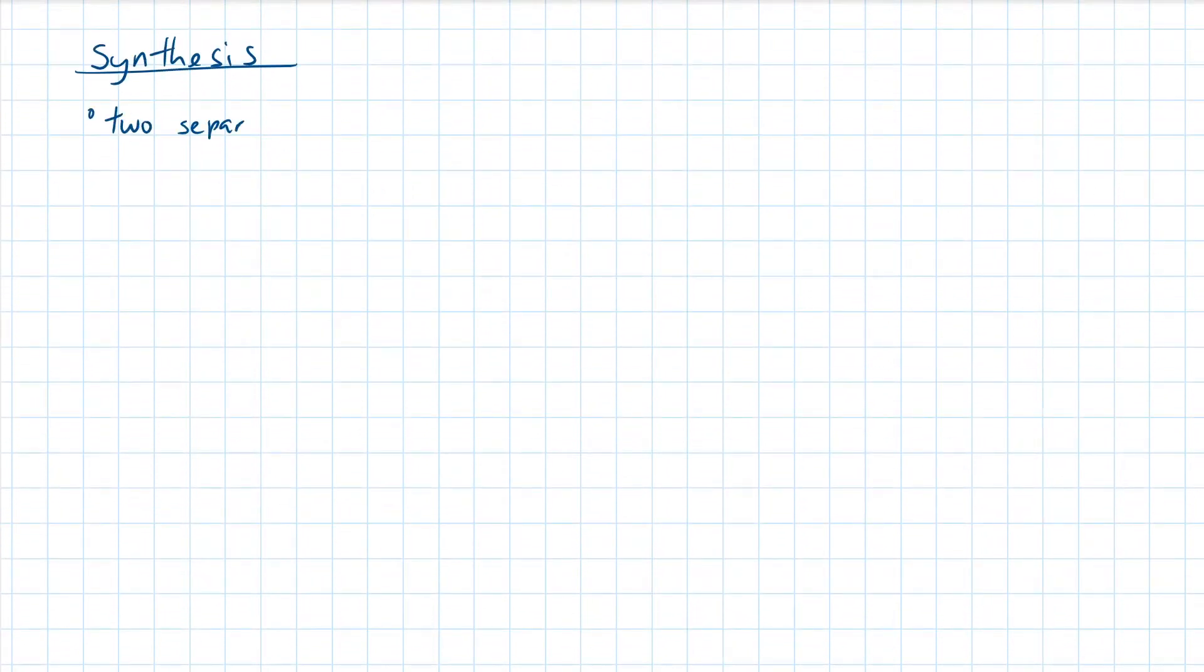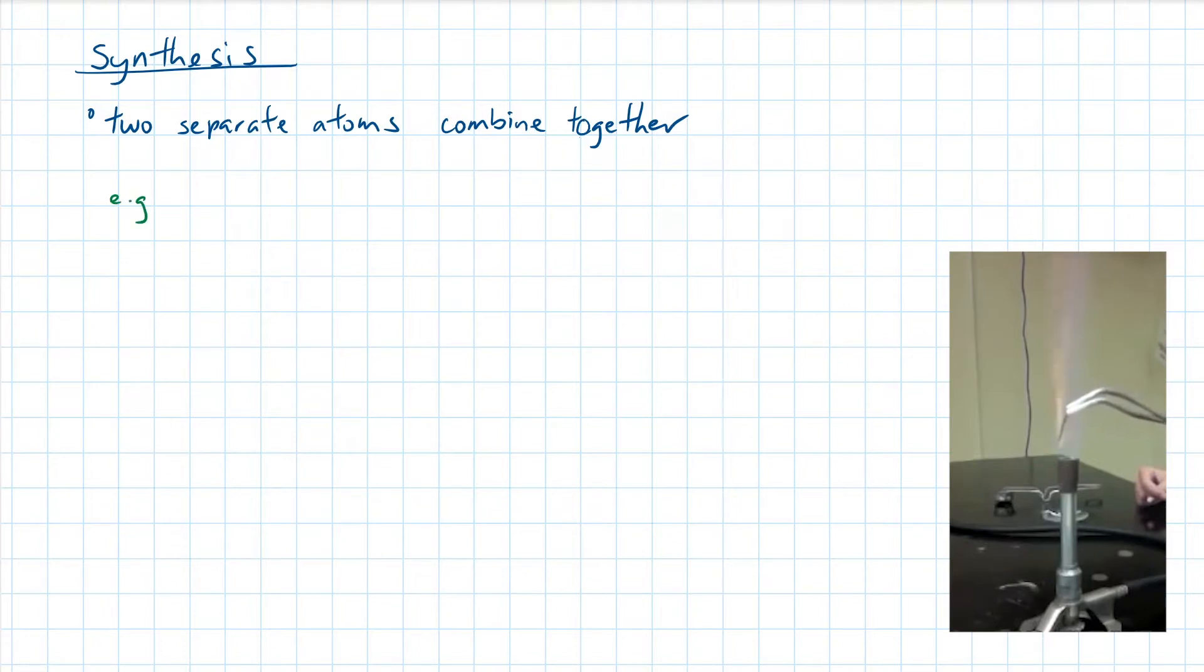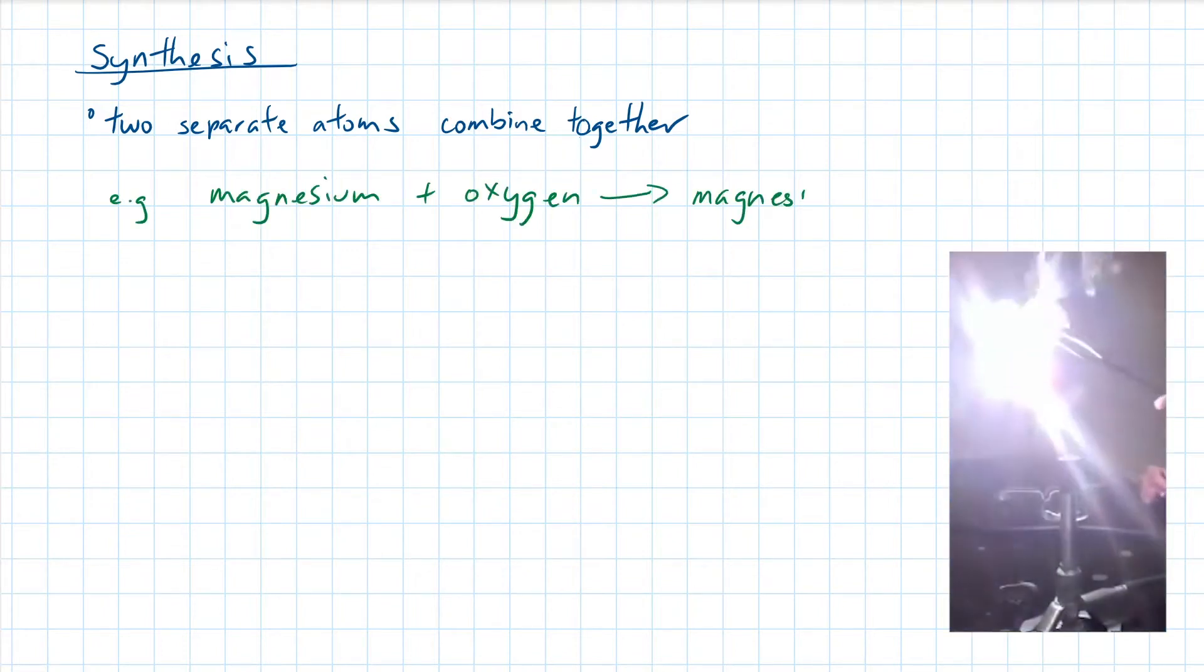The first type of reaction is synthesis. This is when two separate elements bond together to form a new compound. A classic example of this is when magnesium bonds with oxygen to form magnesium oxide.